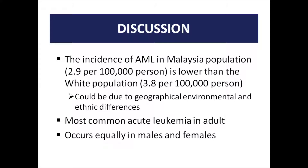In the discussion, the incidence of acute myeloid leukemia in the Malaysian population is 2.9 per 100,000, which is lower than the white population at 3.8 per 100,000. This could be due to geographical, environmental, and ethnic differences. AML is the most common acute leukemia in adults. Although statistics say males are at higher risk than females, a previous Malaysian case study shows males at 51% and females at 49%, suggesting it occurs nearly equally. Our patient is female.